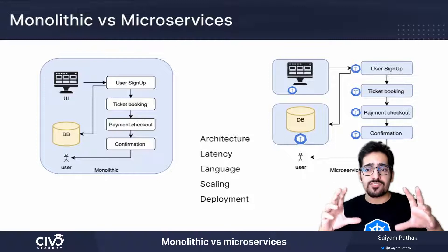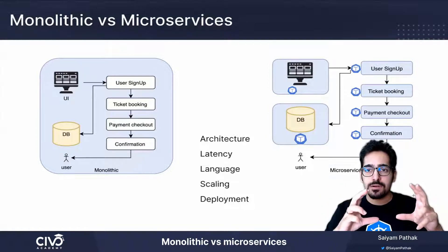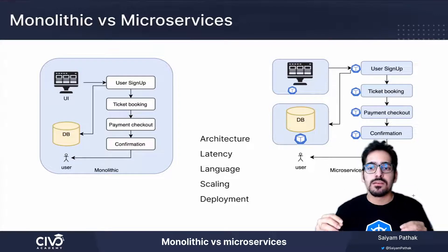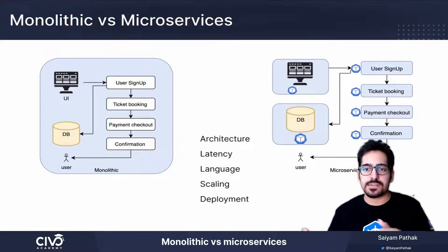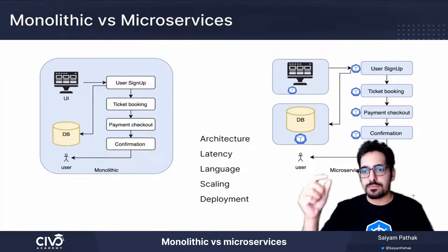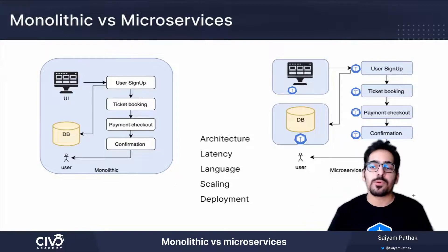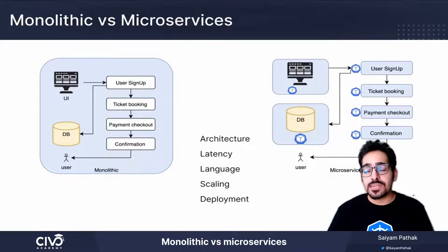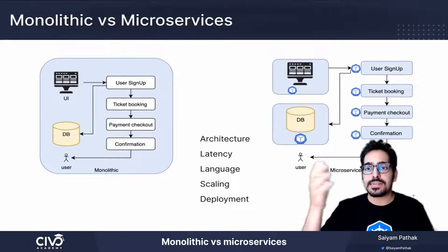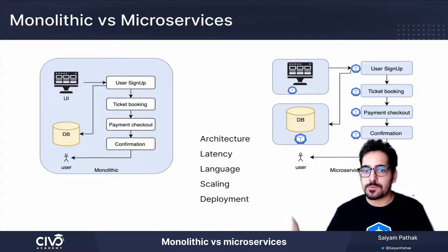In monolithic architecture, all the components are tightly coupled and all the communications that happen are internal to the system. Whereas in a microservices architecture, all components are separate. Basically, you will have user sign up as a separate component, ticket booking as a separate component, and so on. The communication happens via external interfaces — these are separate APIs that communicate over the network.